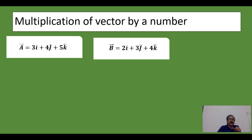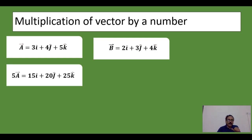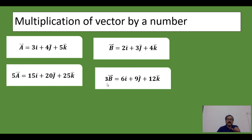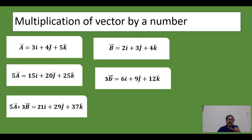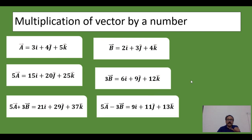Now let us go through another example. If two vectors are given — A is equal to 3I plus 4J plus 5K, and B is equal to 2I plus 3J plus 4K — then 5 times A means each coefficient is multiplied by 5, and 3 times B gives 6I, 9J, and 12K. As we have learnt, for addition and subtraction, I to I correspondingly we add, just like algebraic addition and subtraction.